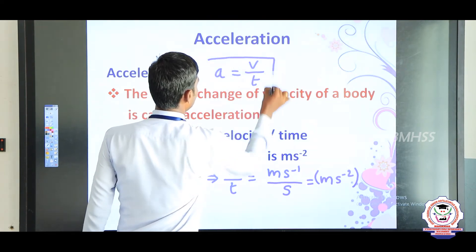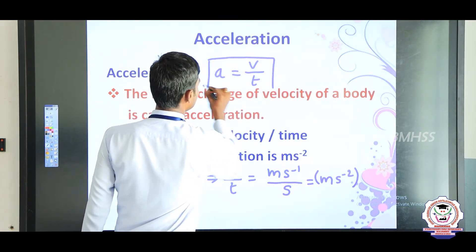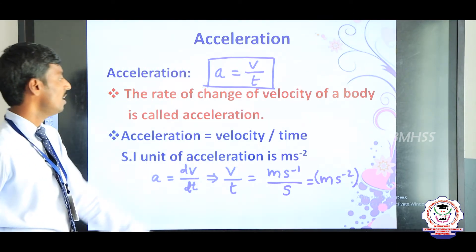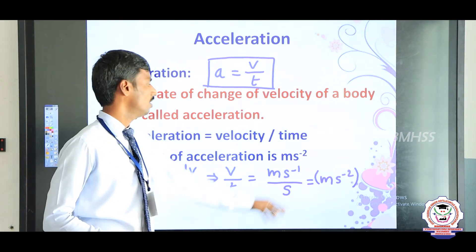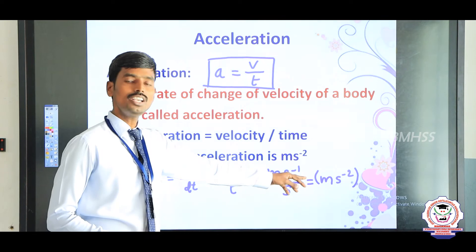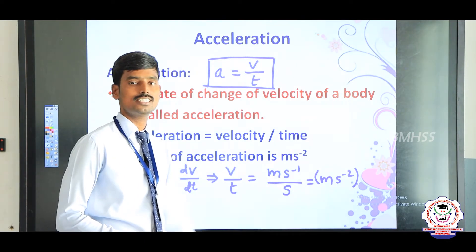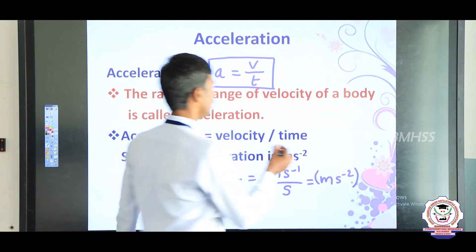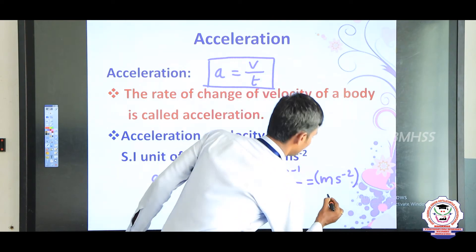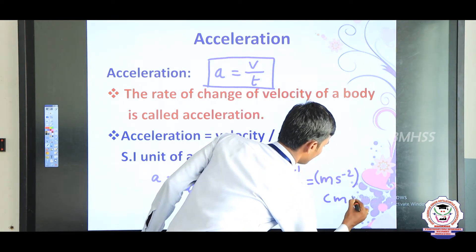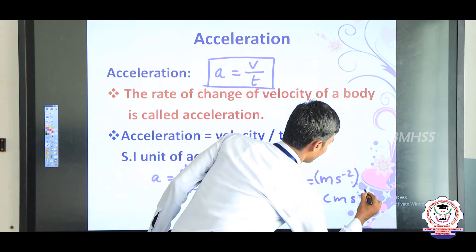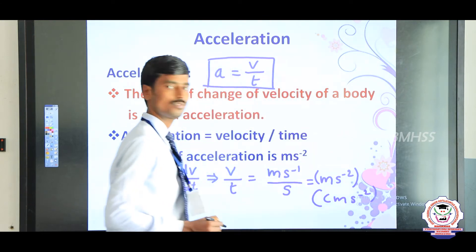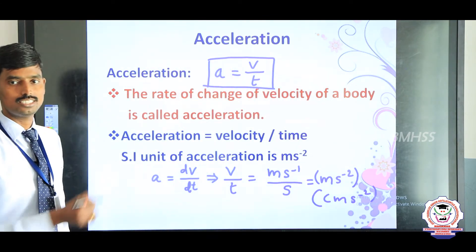The SI unit of acceleration is meter per second square (m s⁻²). In the CGS system, the unit of acceleration is centimeter second power minus 2 (cm s⁻²).